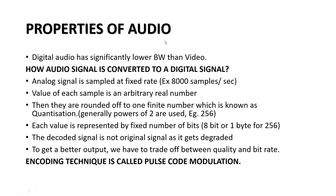Talking about properties of audio, audio can be encoded using the pulse code modulation (PCM) technique, which you have studied in semester 4 in the first module of data communication. The analog signal is sampled at a fixed rate, and the samples are rounded off to powers of 2, like 256. For example, 2 to the power 8 is 256, so it can be represented on 8 bits. If the decoded signal is not exact, it becomes degraded at the receiving end, so we must trade off between quality and bit rate.